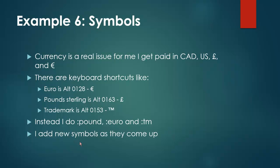Number six, and this has been really helpful for me, is symbols. I get paid and I have clients all around the world, so I'm often doing quotes in Canadian funds, US funds, pound sterling, and euros. It's very hard to type those on normal keyboards. There are keyboard shortcuts — you can hold Alt and hit 0128 for a euro symbol, or Alt 0163 for pound sterling — but I don't remember all those symbols every time. So now I've set up within my text expander just 'colon pound', 'colon euro', or 'colon trademark', and it will insert the euro, pound, or trademark symbol. Every time I have a new symbol I need a keyboard shortcut for, I immediately add it to PhraseExpress right away.